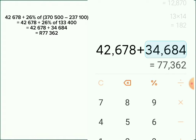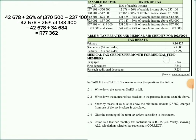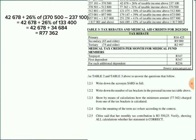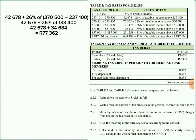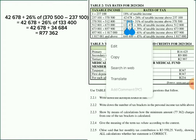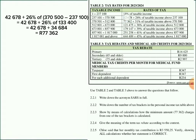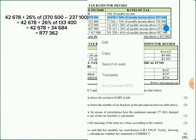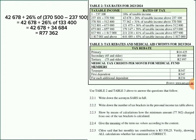So let's go back to the question — it says show by means of calculation how the minimum amount of R77,362 from one of the tax brackets is calculated. In simple terms: how did we get R77,362? We took these calculations here. We said R42,678 plus 26% of, then we put in brackets 503,100 minus 370,500.